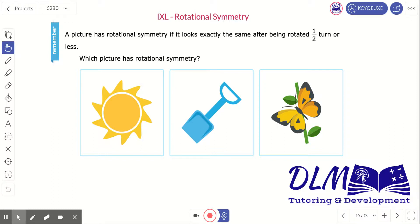Welcome to DLM Tutoring. Today we're going to discuss IXL skill Rotational Symmetry. For this skill, it's important to remember that a picture has rotational symmetry if it looks exactly the same after being rotated one half turn or less.